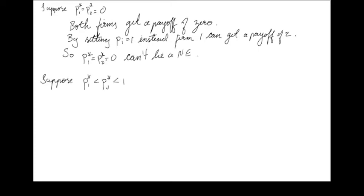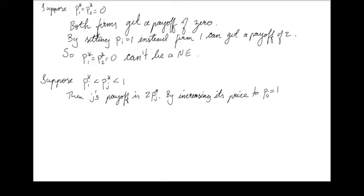The next case is where both firms set prices less than 1, but they're not the same price — firm i's price is less than firm j's price. Then j's payoff is going to be 2 times Pj*, because firm i gets to serve 8 while firm j gets the remaining 2. But firm j could increase its price to 1 and ensure itself a payoff of 2. So it can't be an equilibrium for both firms to set a price lower than 1 with different prices.